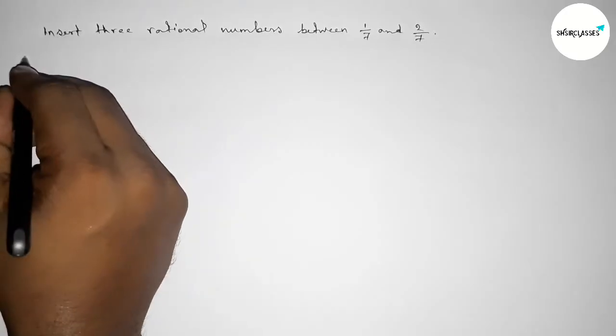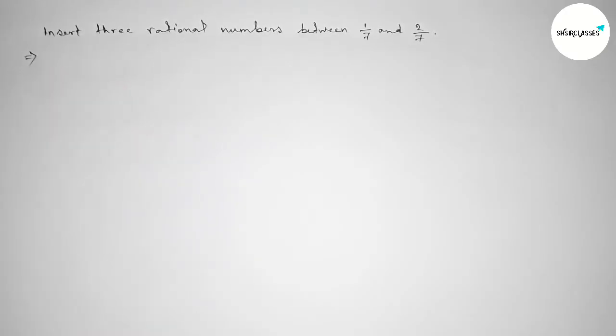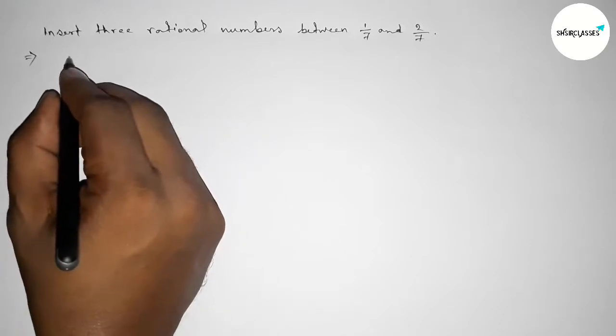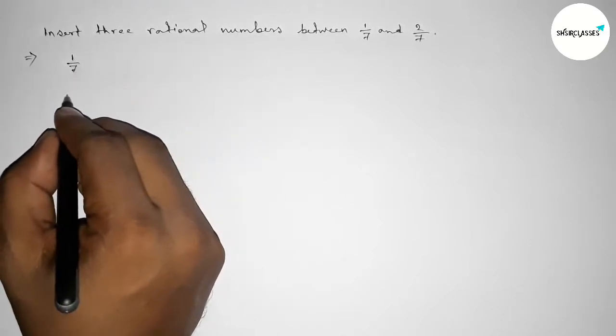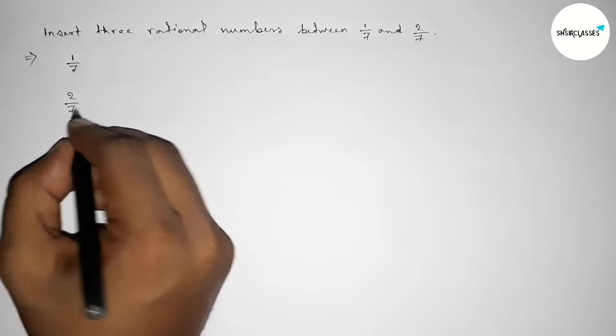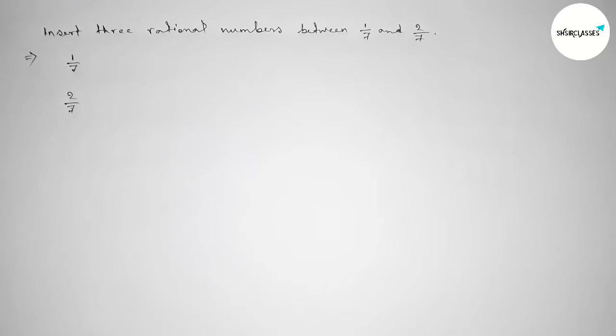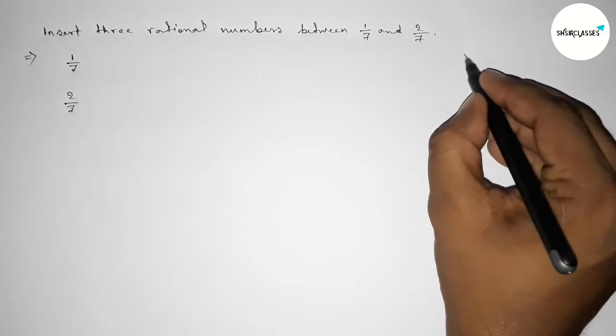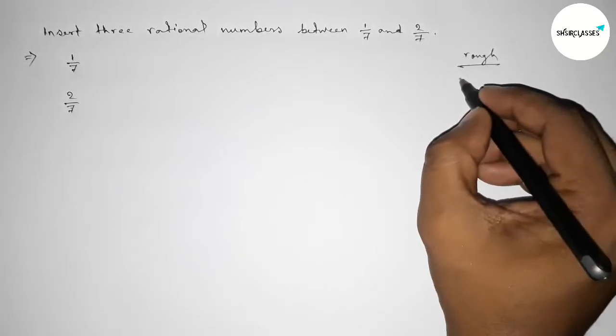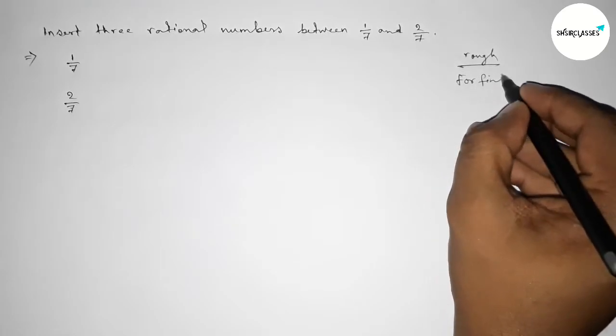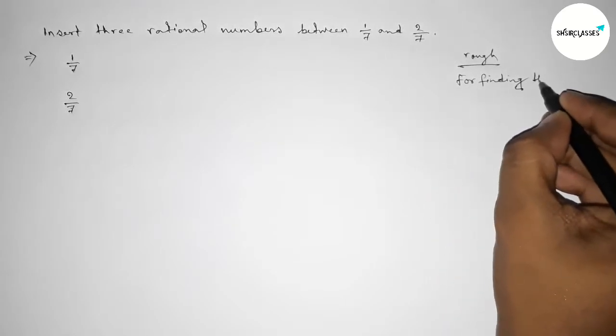So first of all, let's solve this problem. Here given first two numbers, 1 over 7 and 2 over 7. And here the denominator of both numbers are same.